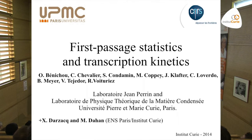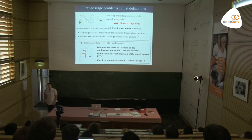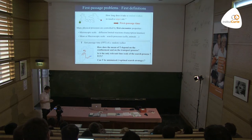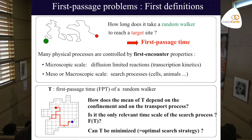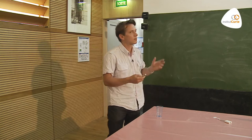Let me state the main question I want to discuss. I'll be considering one searcher — my green guy — which is a random searcher performing some kind of random walk. This searcher moves in the presence of a fixed target, the red guy. The question we want to address is: how long does it take the searcher to find the target? In the random walk language, I call this search time a first passage time, since the target is found upon the first encounter.